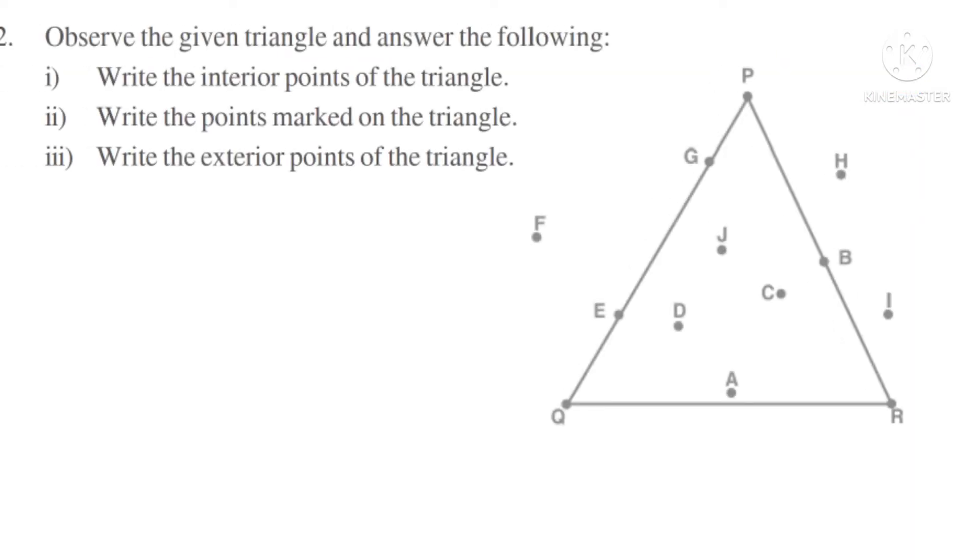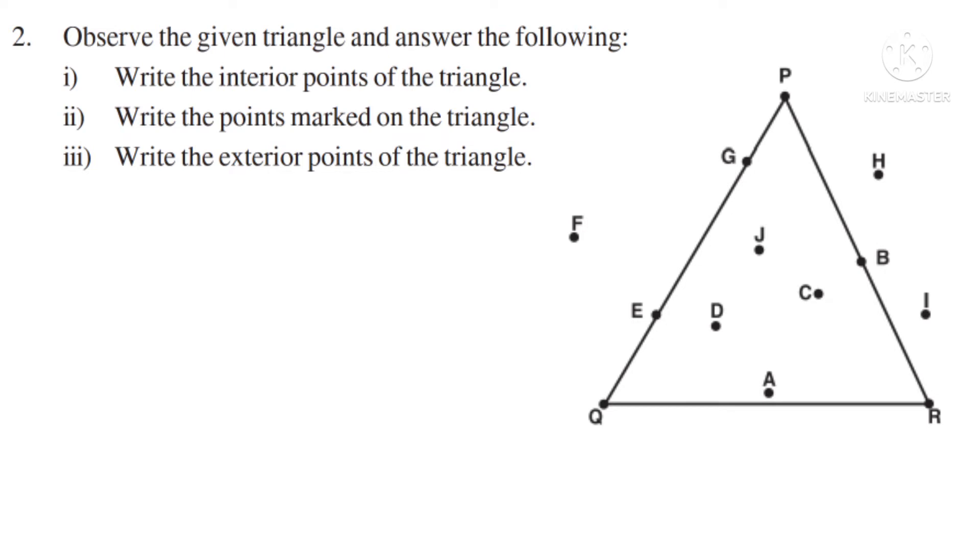Now let us take the second question. Observe the given triangle and answer the following. There are three questions. Write the interior points of the triangle. Solution 1. Interior means inside points. They are A, C, D and J.